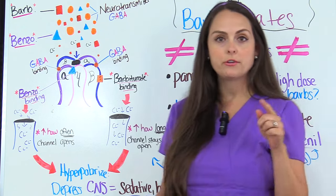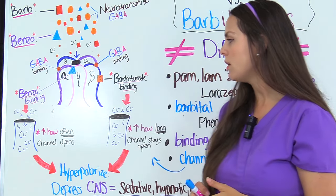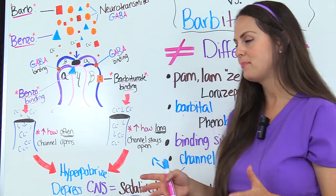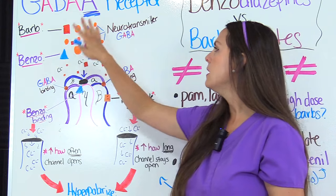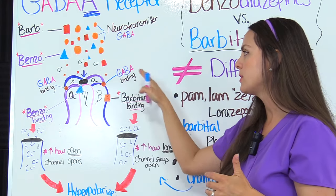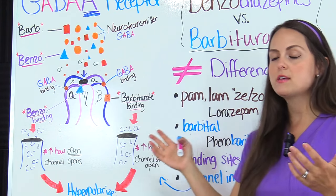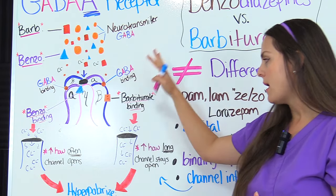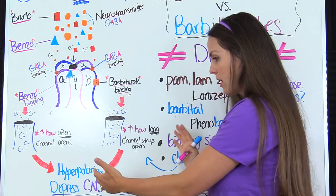One key concept to remember is that benzodiazepines increase how often this channel opens up. Now on the flip side, let's look at barbiturates. Again, we have the binding of GABA at its site, and the barbiturate binding site is found on either the alpha or the beta subunit. It binds and also causes that channel to open up, so chloride goes in and hyperpolarizes the cell.